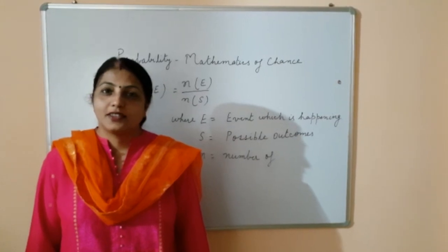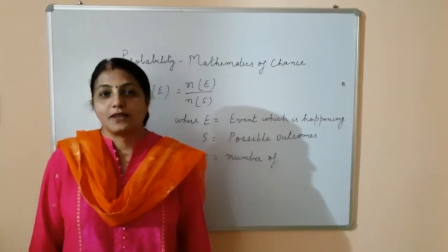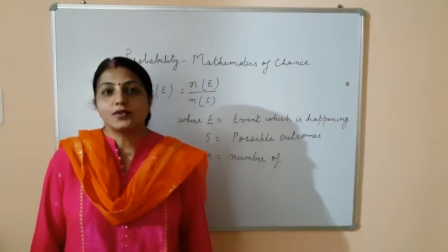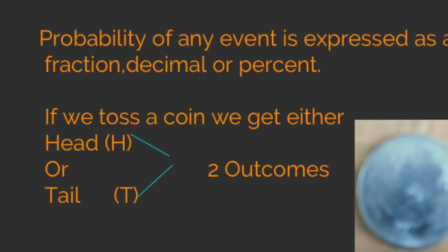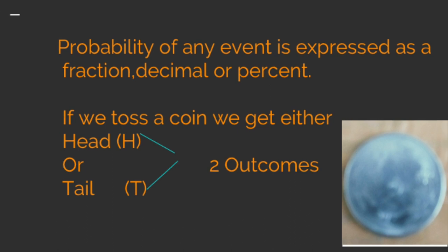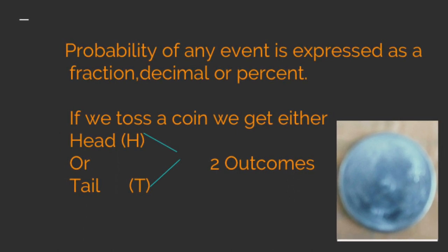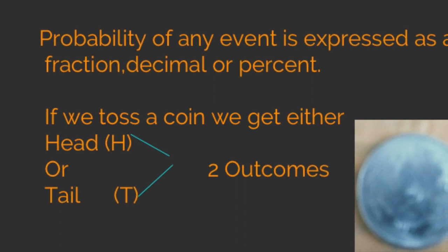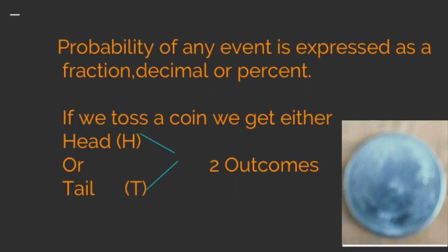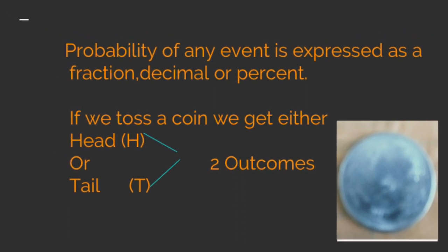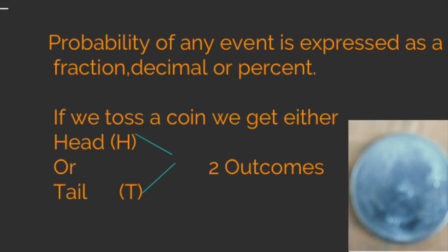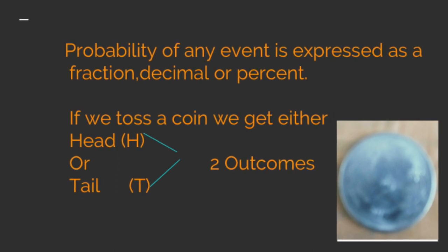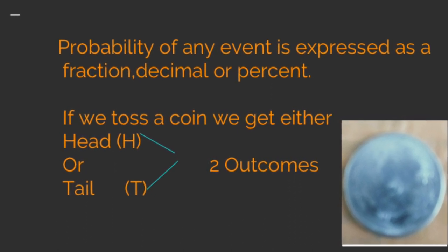Hello everyone, today I am going to explain the term "at least" which is used in probability. We express probability as a fraction, decimal, or percentage. If we toss a coin, we get two outcomes: either head or tail. To explain "at least," I want to show an example.